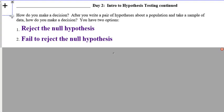How do you make a decision? After you write a pair of hypotheses, your H0 and your Ha, and you take sample data, how do you make a decision? You have two options.